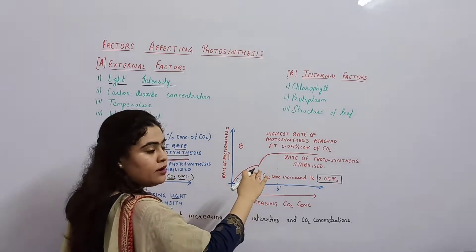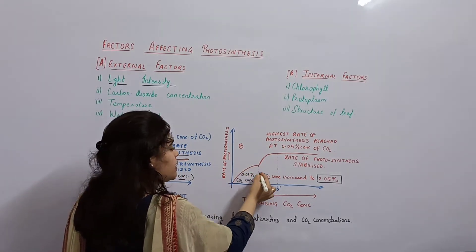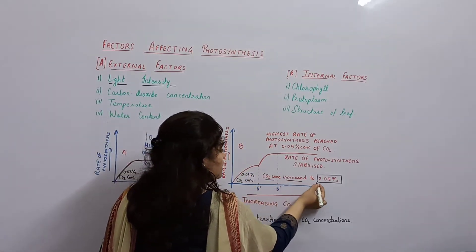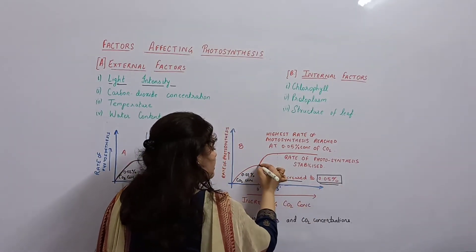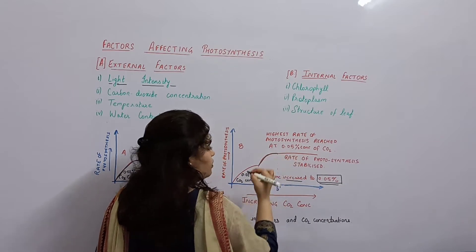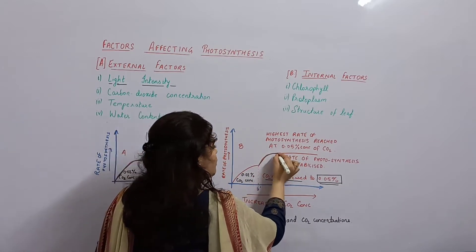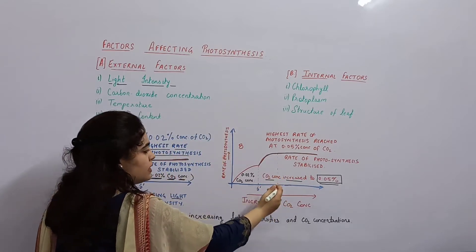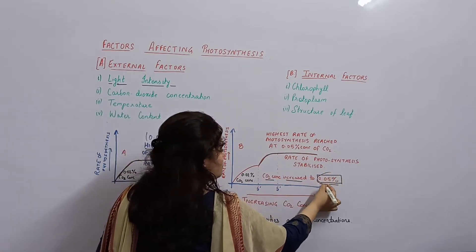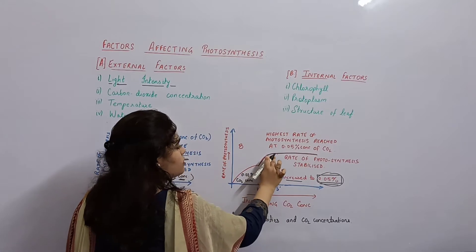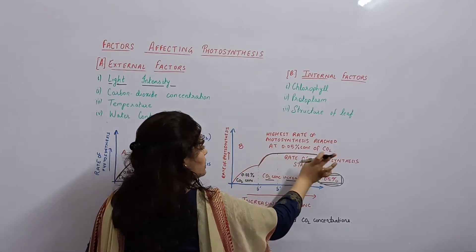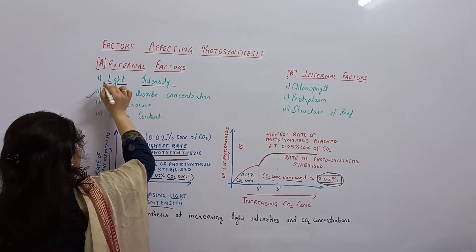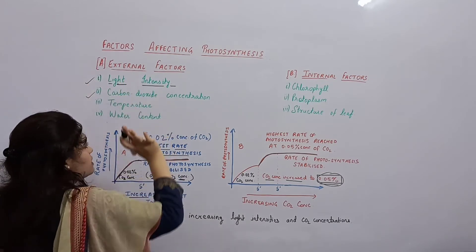If concentration of CO2 increases, then light intensity will increase photosynthesis. After some time again the rate of photosynthesis gets stabilized. This becomes the carbon dioxide concentration and light intensity which we have discussed.